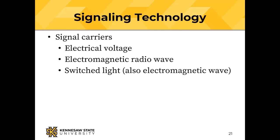Signaling can be done by changing electrical voltage, by changing electromagnetic radio waves, or by changing light waves. Light is also an electromagnetic wave, but it's different enough from radio waves that we tend to think of it separately.